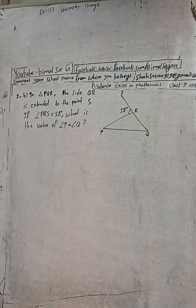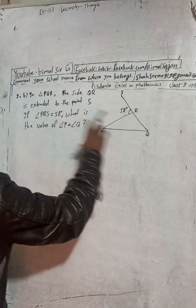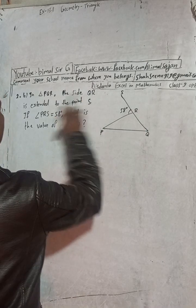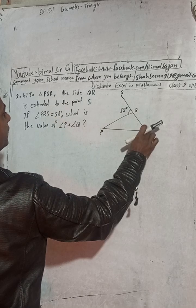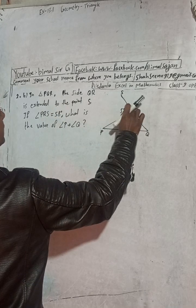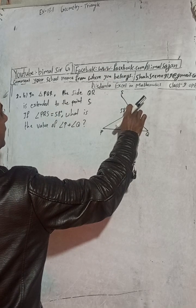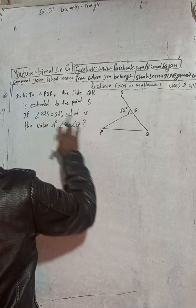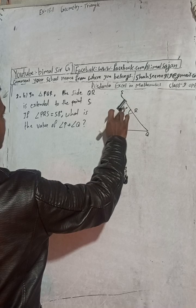This is question number 2B. In triangle PQR, the side QR is extended to the point S. This QR is extended from here. If angle PRS is 50 degrees...